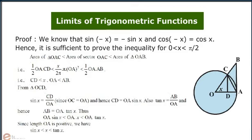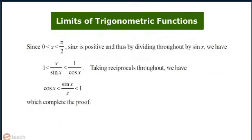Now as the length OA is positive we have sin x is less than x which is less than tan x. Since x lies between 0 and π by 2, sin x is positive, and thus by dividing throughout by sin x and taking reciprocals throughout, we have cos x less than sin x by x which is less than 1. This completes the proof.